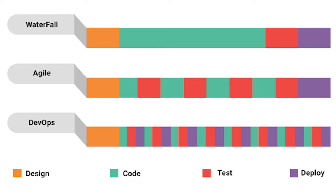Initially people used to work with the waterfall model, but today people prefer to work in the agile model. The combination of development and operations — the development part being the agile model — is the total process that DevOps follows. So I'm providing you the initial knowledge here.